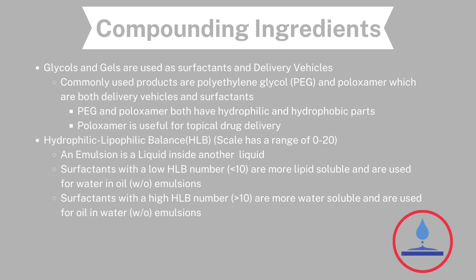An emulsion is a liquid inside another liquid, so there needs to be a balance of the hydrophilic to the lipophilic components. For surfactants with a low HLB number — less than 10 — they are considered more lipid soluble and are used for water-in-oil emulsions. Surfactants with a high HLB number — greater than 10 — are more water soluble and are used for oil-in-water emulsions.